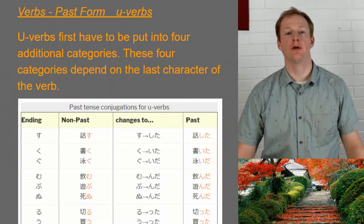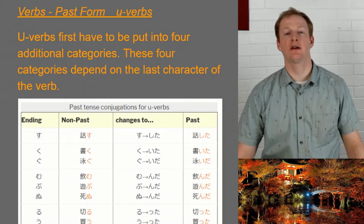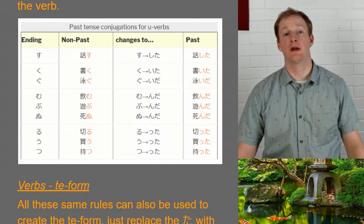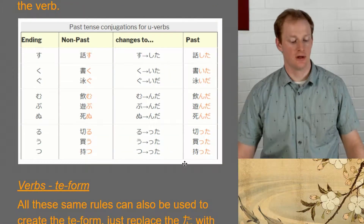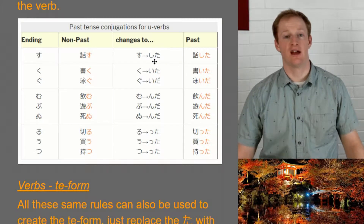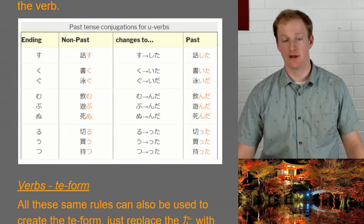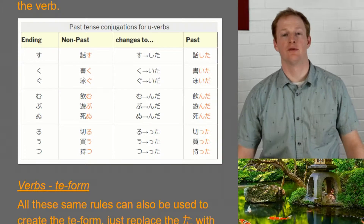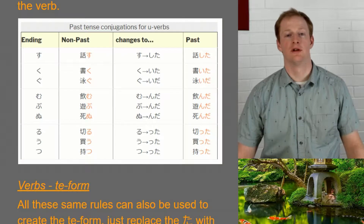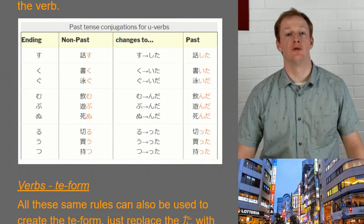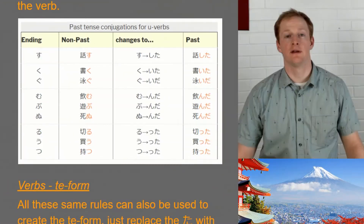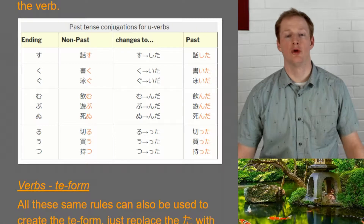Next up is u verbs — a little more involved. We're splitting u verbs into four categories. The first category has one entry: all verbs that end in su. Here we use hanasu. The su becomes shita, so the end result is hanashita. This applies to every verb ending in su — for example, unagasu, meaning to encourage someone, becomes unagashita.